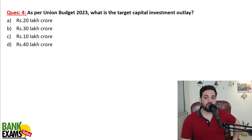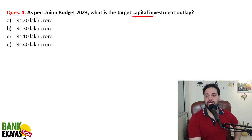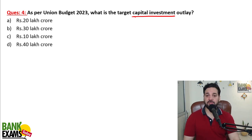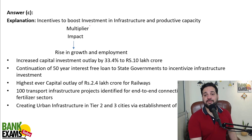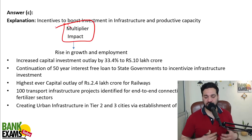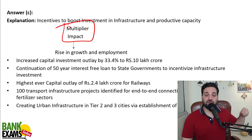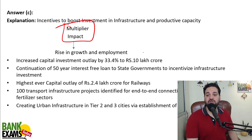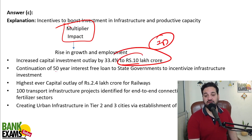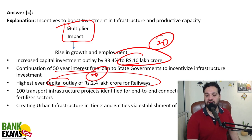As per Union Budget 2023, what is the target capital investment outlay? Capital investment ka target 10 lakh crore rakhha gaya hai. Capital investment has a multiplier effect — when investment happens on infrastructure, it generates employment and gives an impetus to the whole economy. There has been a 33.4% increase to 10 lakh crore rupees. State governments will be given 50-year interest-free loans.